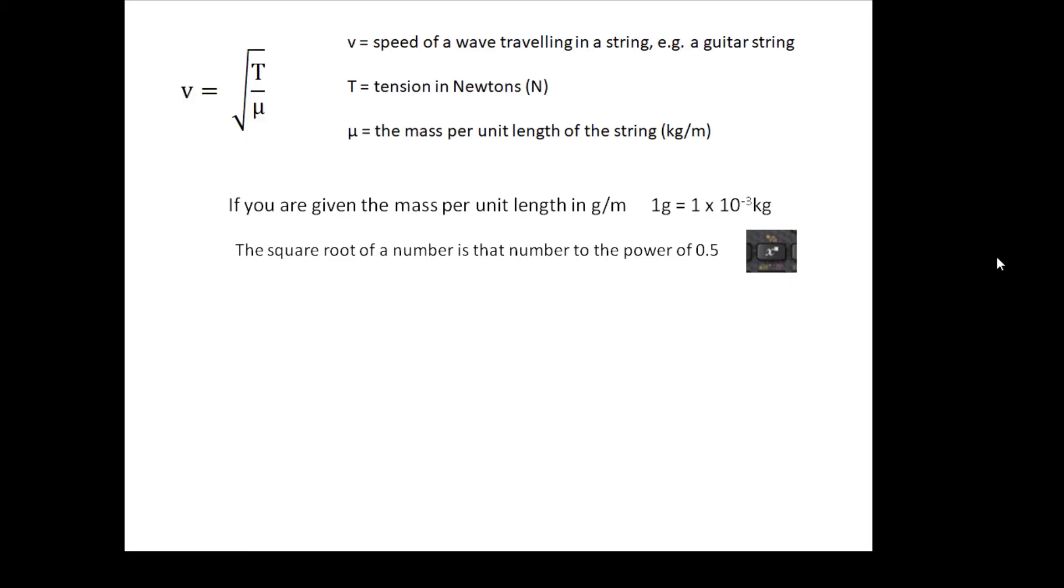The other tricky thing about this equation is working out the square root. I doubt very much you're going to have to rearrange this equation. You'll be given the tension, you'll be given the mass per unit length. You divide the tension by the mass per unit length and then you get the square root of that. To get a square root on a calculator, there's a button which is x to the y. If you put x to the 0.5, that will tell you the square root. That's how I always work out the square root on the calculator: work it out, put it to the power of 0.5, and that will be your answer.